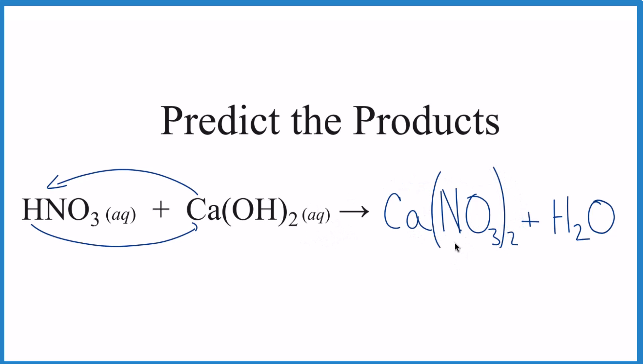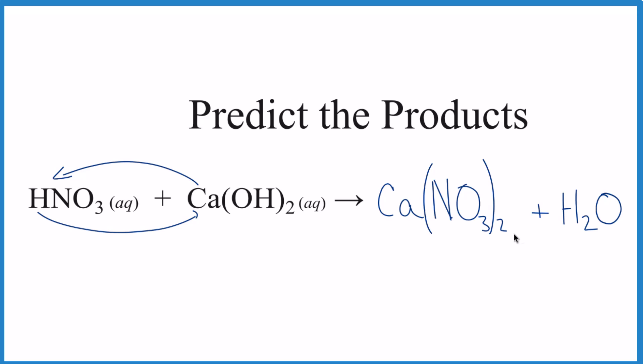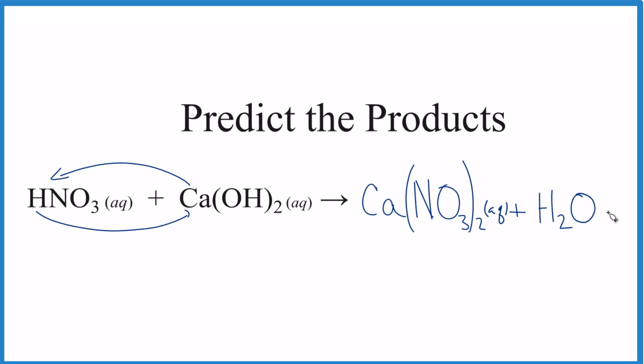And now we have our calcium nitrate and water. Note that the overall equation is not balanced, but we're not going to worry about that right now. If we wanted to write the states, nitrates are very soluble, so this is going to be aqueous (aq), and water, that would be a liquid. So that's how you predict the products of nitric acid plus calcium hydroxide.